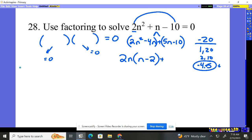Right here, what factors out? Just a 5, and I'm left with n - 2 also. So notice they both have n - 2, so that's one of the two binomials, and the other one's going to be 2n + 5.